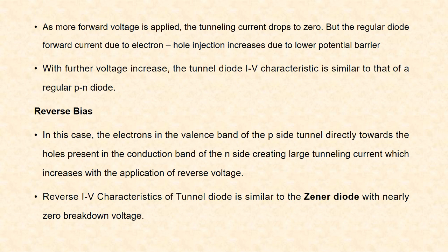Now, under reverse bias condition, the electrons in the valence band of p-side tunnel directly towards the holes present in the conduction band of n-side, creating a larger tunneling current which increases with the application of reverse voltage. The reverse I-V characteristics of tunnel diode is similar to that of a zener diode with nearly zero breakdown voltage.